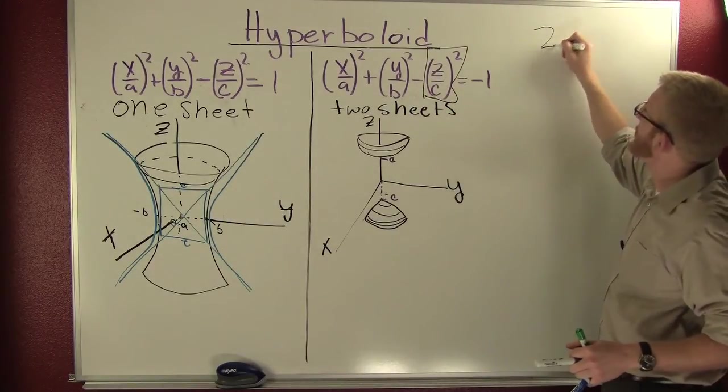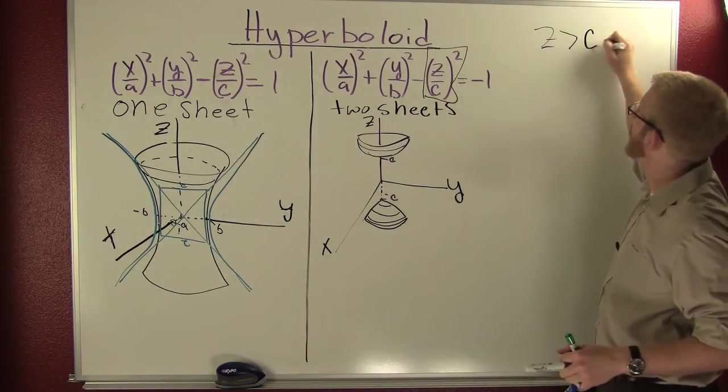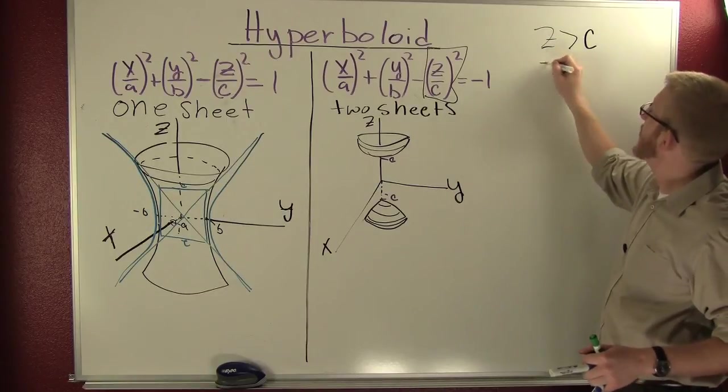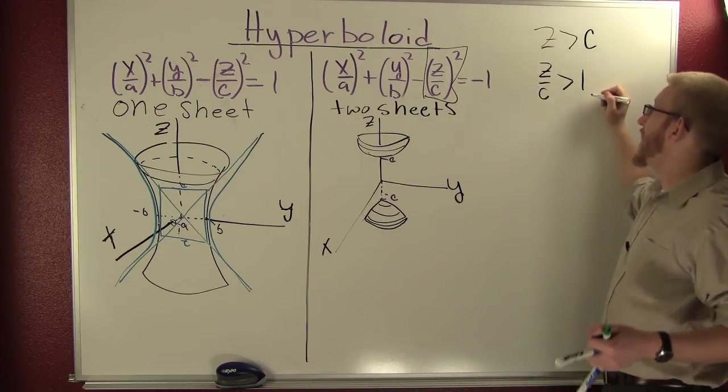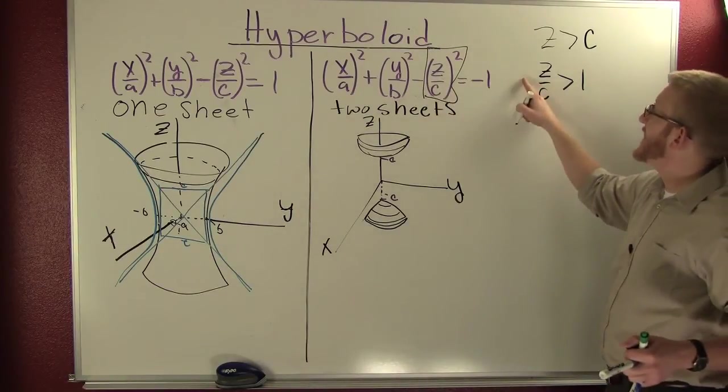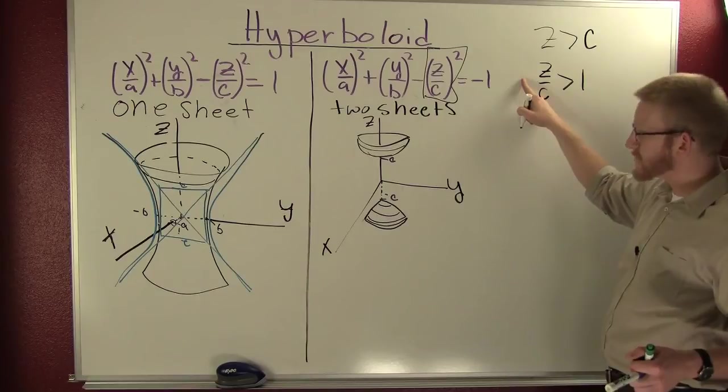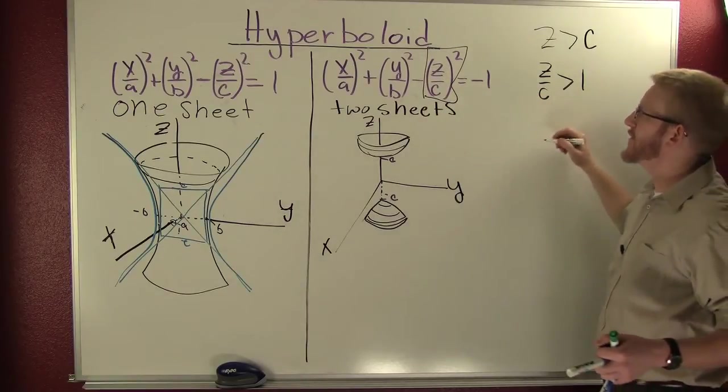Z can be bigger than C. What does that mean? That means that Z over C is bigger than one. What does that mean? That means when I add this to both sides, I get a real ellipse.